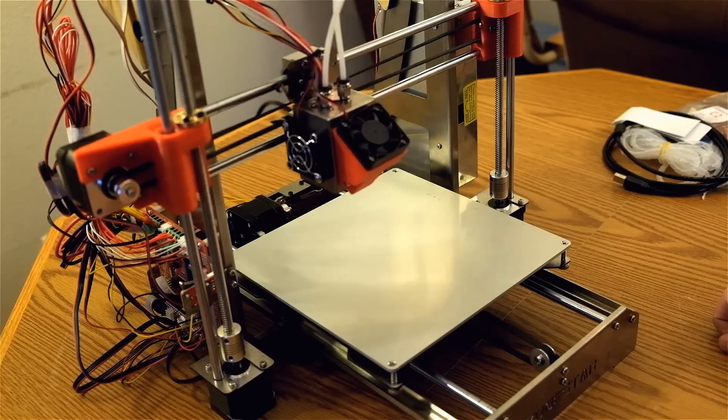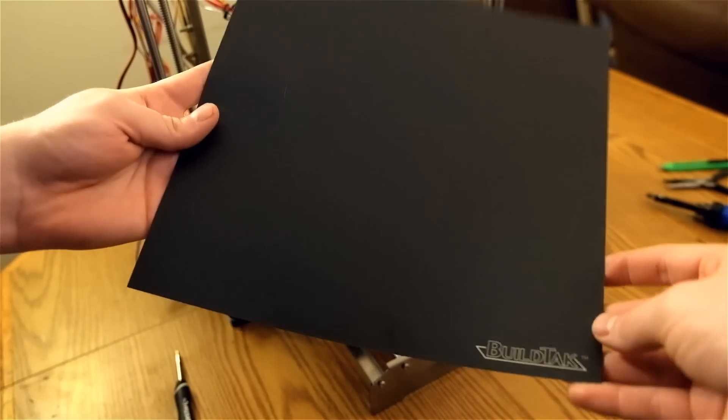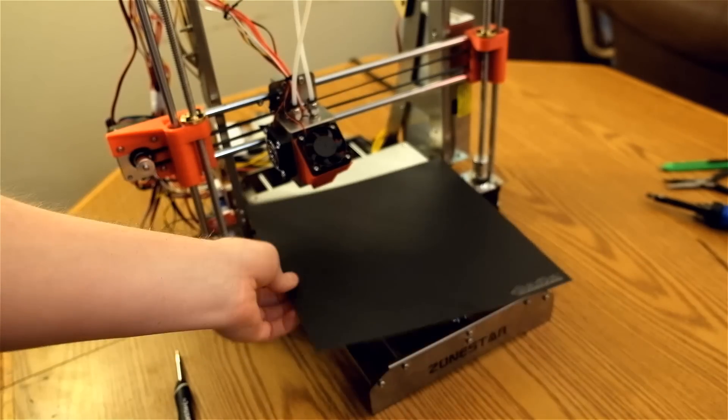I don't recommend printing directly to the metal plate. It's best to use some sort of adhesive like blue painter's tape, but I've had great results using BuildTac in the past, so I'm going to go ahead and use that.